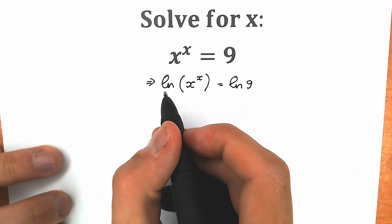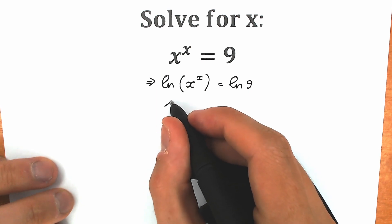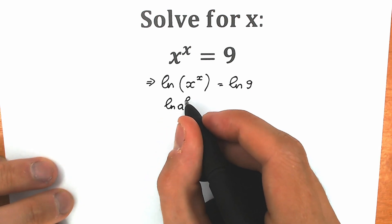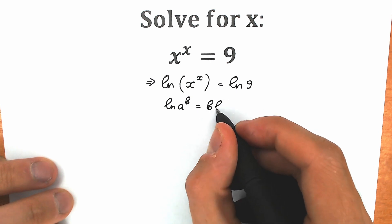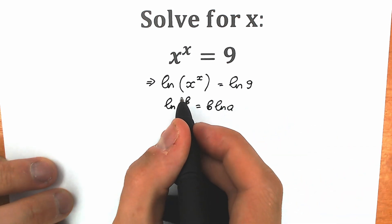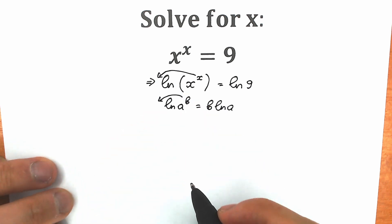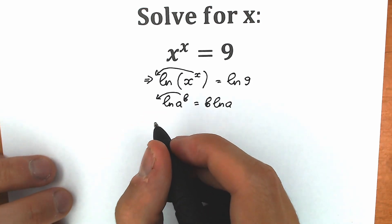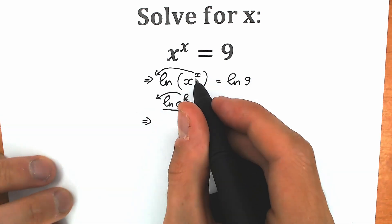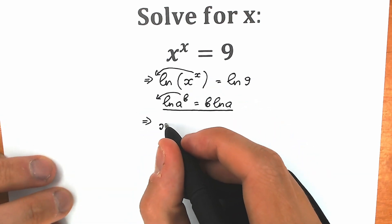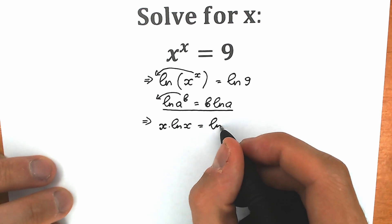According to the main log property, when we have natural log of A raised to the power B, this equals B times natural log A. So this x will come down, and we have x times natural log x equal to natural log 9.